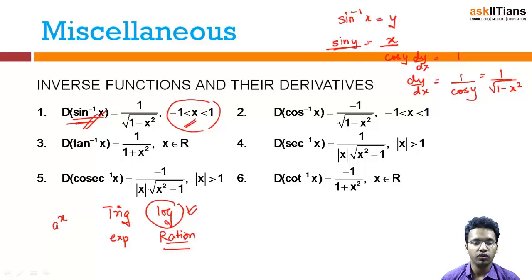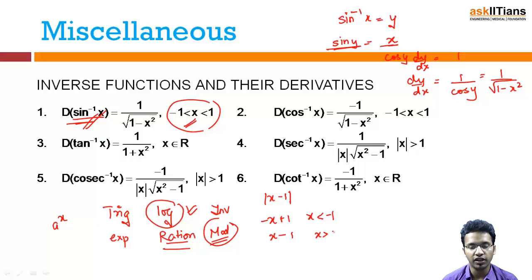This was inverse trigonometric. For mod function, what we need to do is we always need to open up the function first. There will be two derivatives. For example, if I am talking mod x minus 1, what I will be doing is writing it as minus x plus 1 and x minus 1 in their suitable ranges - when x is less than 1, when x is greater than 1. So now the derivative will be minus 1, it will be plus 1.